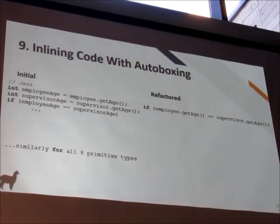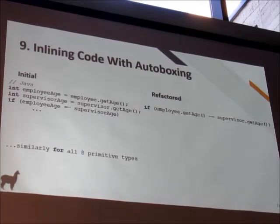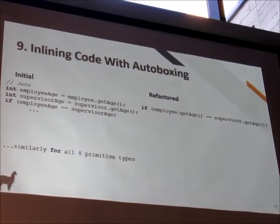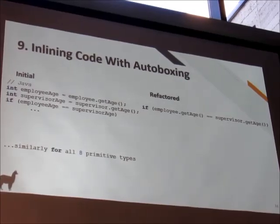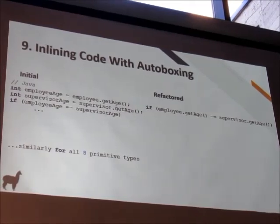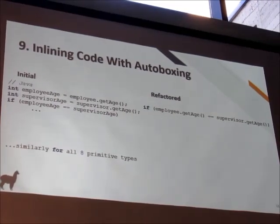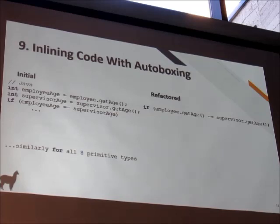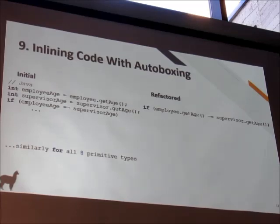Similarly for all eight primitive types. Another example: suppose you wanted to clean up code a little bit. Looking at the initial and refactored version, int employeeAge = employee.getAge() and supervisorAge = supervisor.getAge() — you're like, let's just use them directly rather than storing in temporary variables. What you don't see is that getAge() returns an Integer wrapper which was automatically unboxed and stored as a primitive. Now you're checking if two Integer wrappers point to the same object rather than having the same value — so again, the logic is broken.